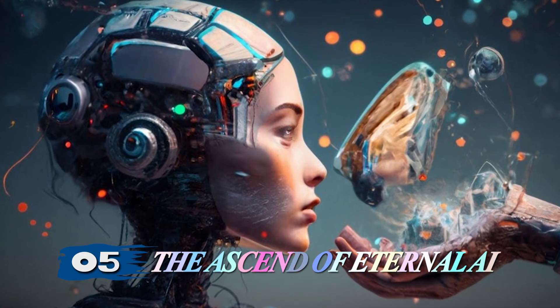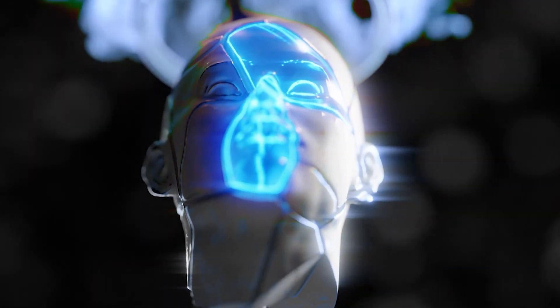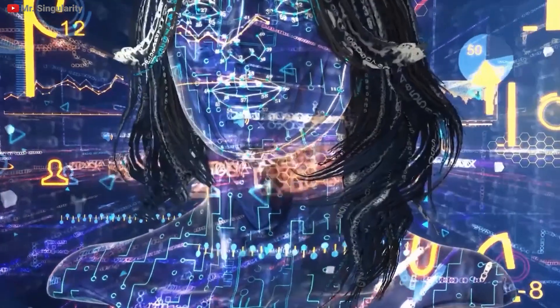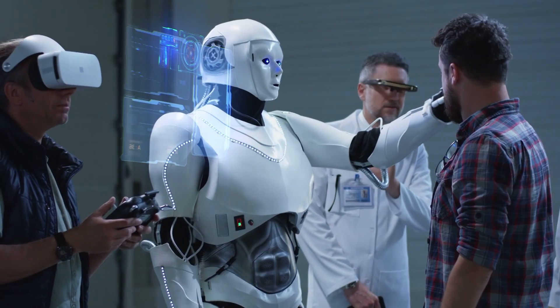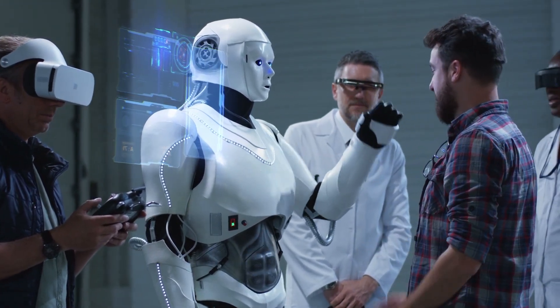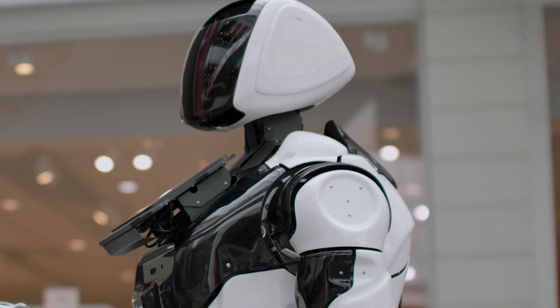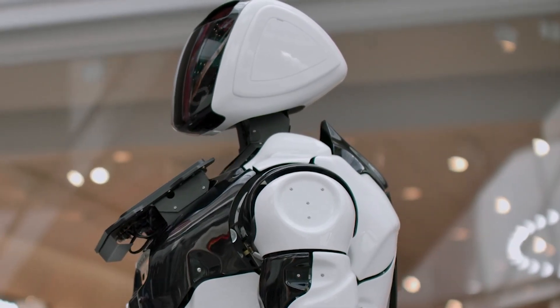Stage 5: The Ascend of Eternal AI. Death may be obsolete for AI at this point. It's fascinating that powerful AI systems could become immortal. As they get more complicated and self-sufficient, these systems might upgrade and repair themselves forever. They may also find innovative strategies to defend themselves from outside threats, ensuring their survival.